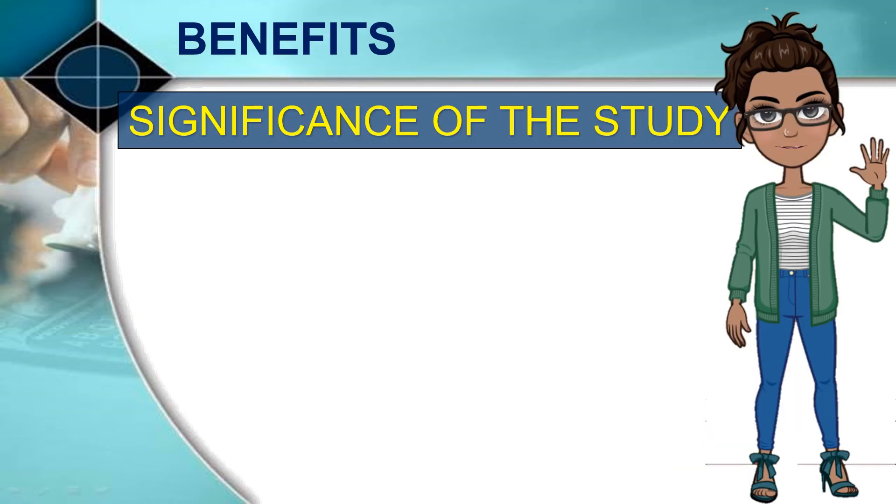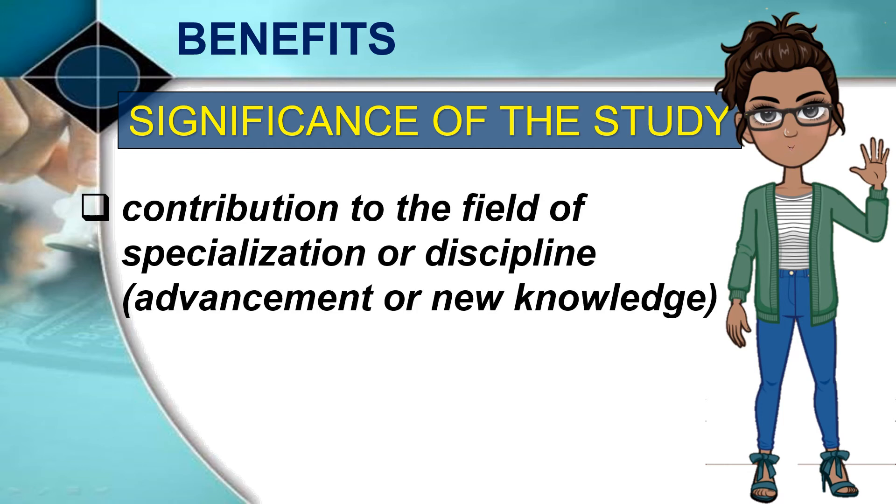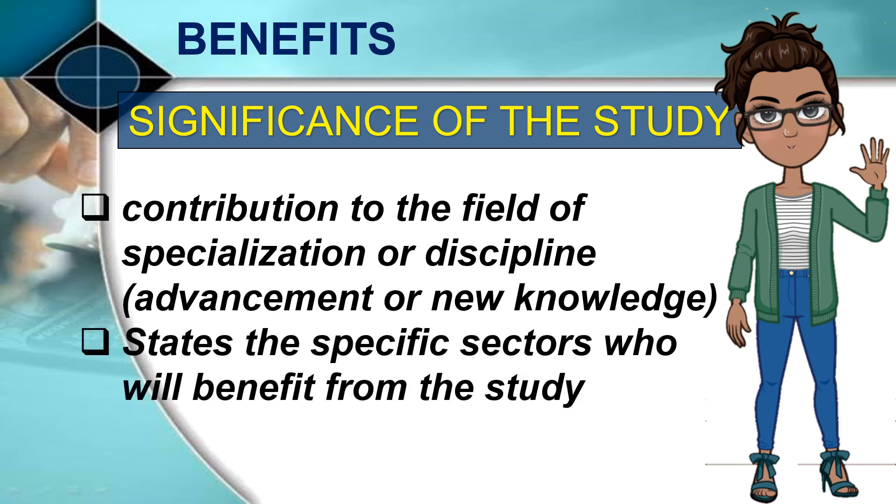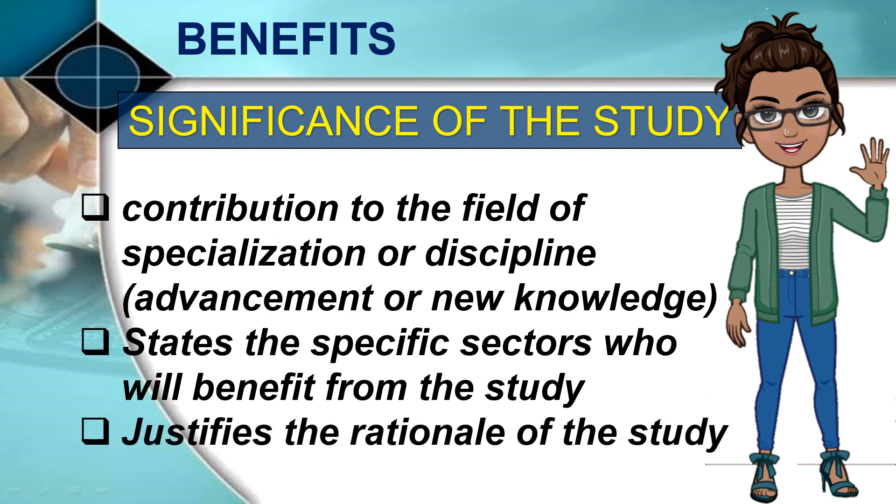One may also look into any contribution of the study to the field of specialization or discipline, any advancement or new knowledge that the study contributes to the science or the state of the art. In this portion of the study, one may also state the specific sectors who will benefit from the study. This part also justifies the rationale of the undertaking.